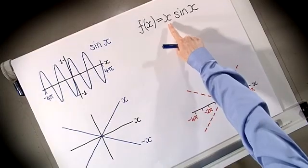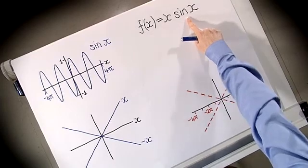In this video we're going to look at sketching functions that are a product of two other functions. An example is the function x·sin(x). To sketch this function we're going to look at f(x) = x and f(x) = sin(x) separately and then try to put them together.